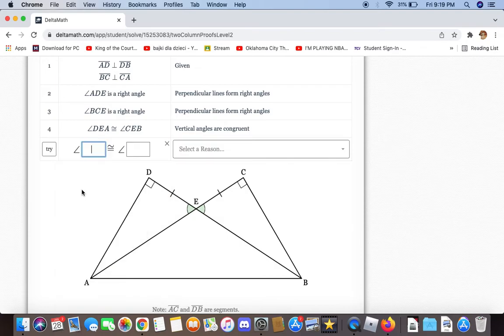We now have to clarify that triangles ADE and BCE are congruent, and the reason is all of our angles are congruent.